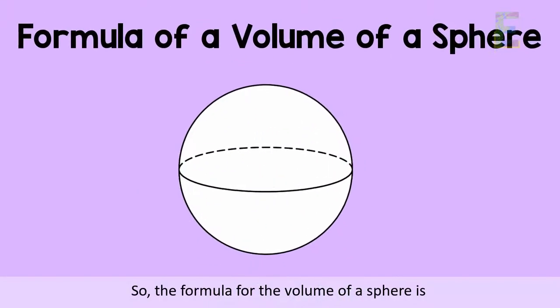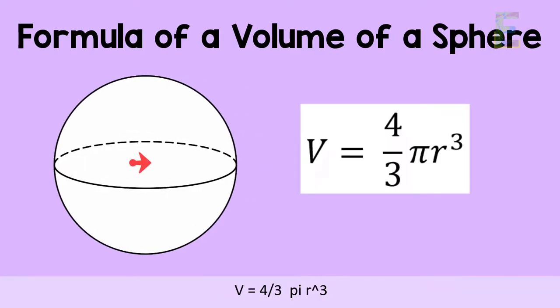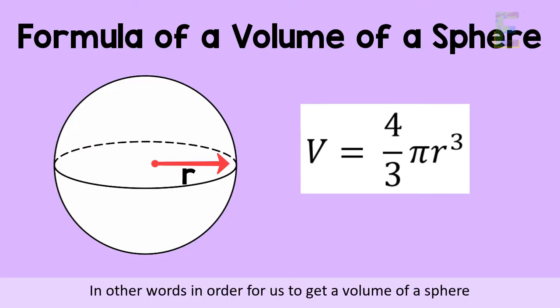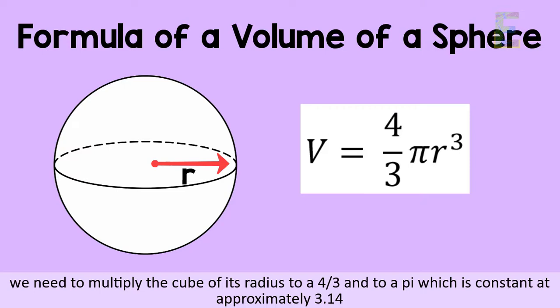So the formula for the volume of a sphere is V is equal to 4 thirds pi r cube. In other words, in order for us to get a volume of a sphere, we need to multiply the cube of its radius to a 4 thirds and to a pi which is constant at approximately 3.14.